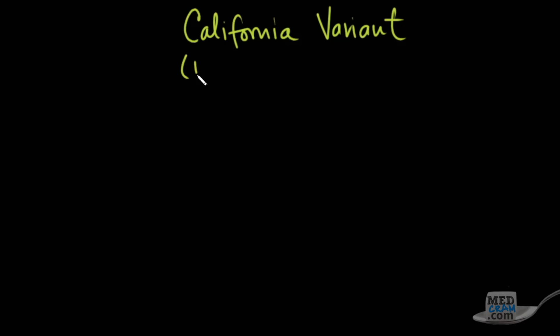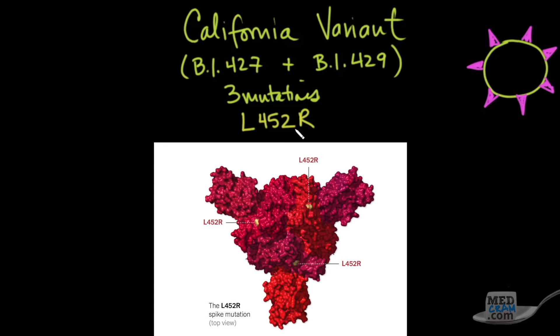It's got two names: B1.427 and B1.429. This variant has three mutations in the spike protein, the protein on the surface of SARS-CoV-2 that interacts with the ACE2 receptor on human cells.